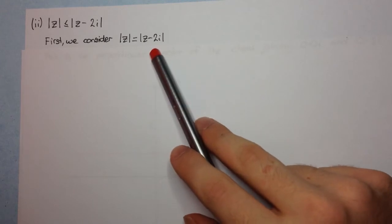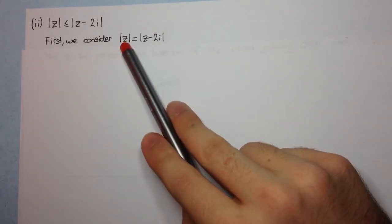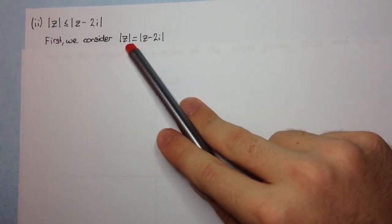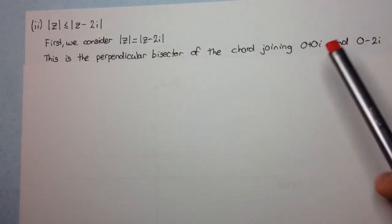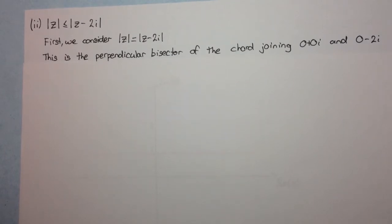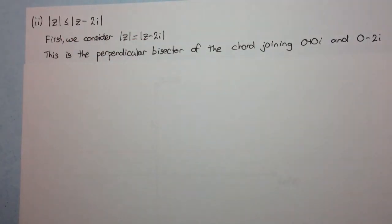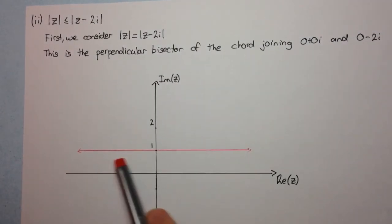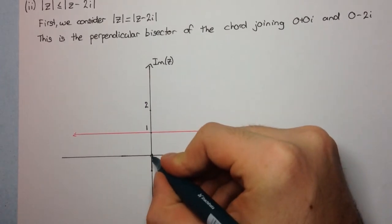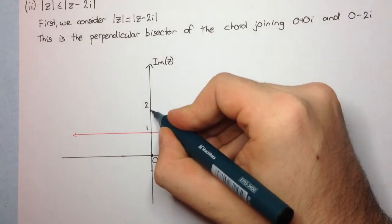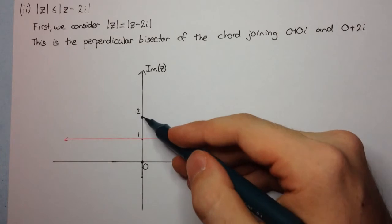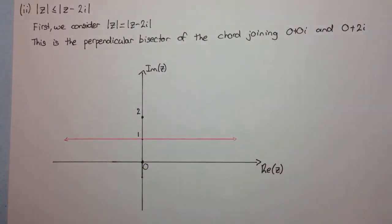Now here we have this in a standard form. Remember, when we have the modulus of z, that's also like considering the modulus of z minus 0. So, from our standard form, we know that this is the perpendicular bisector of the chord joining the two complex numbers. So here the complex number is 0 plus 0i, and here the complex number is 0 plus 2i. And because we have an equals 2, we just draw that line there. So this here is the perpendicular bisector of the line which joins 0 plus 0i, which is this point here, to 0 plus 2i. This is our chord here between 0 and 2, and this is the perpendicular bisector.